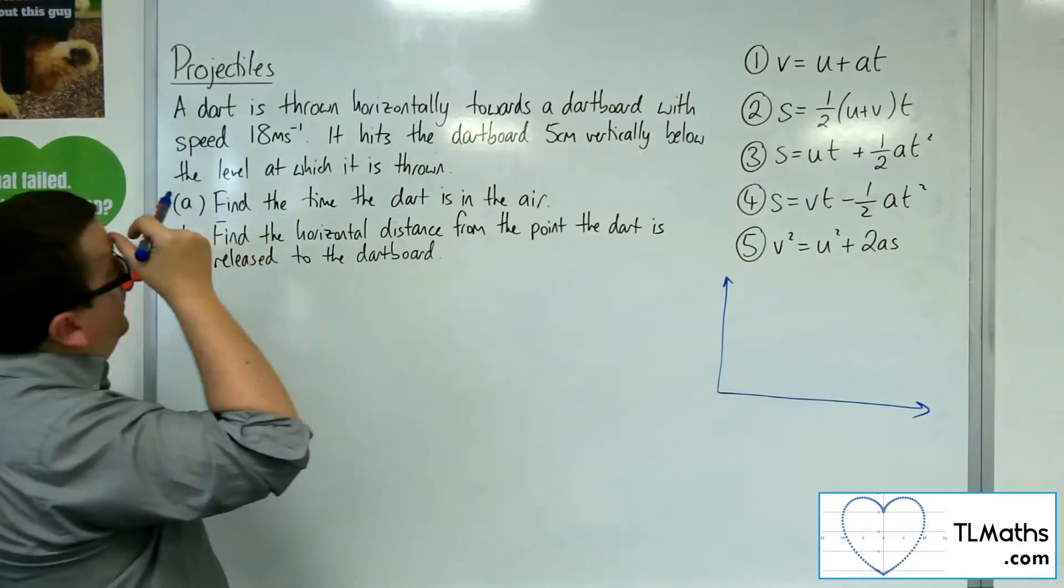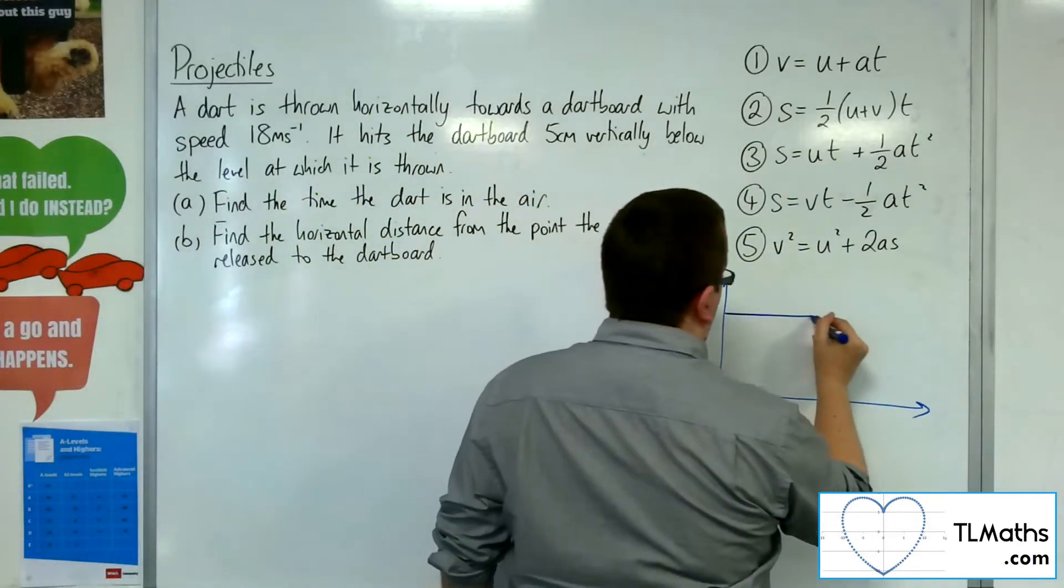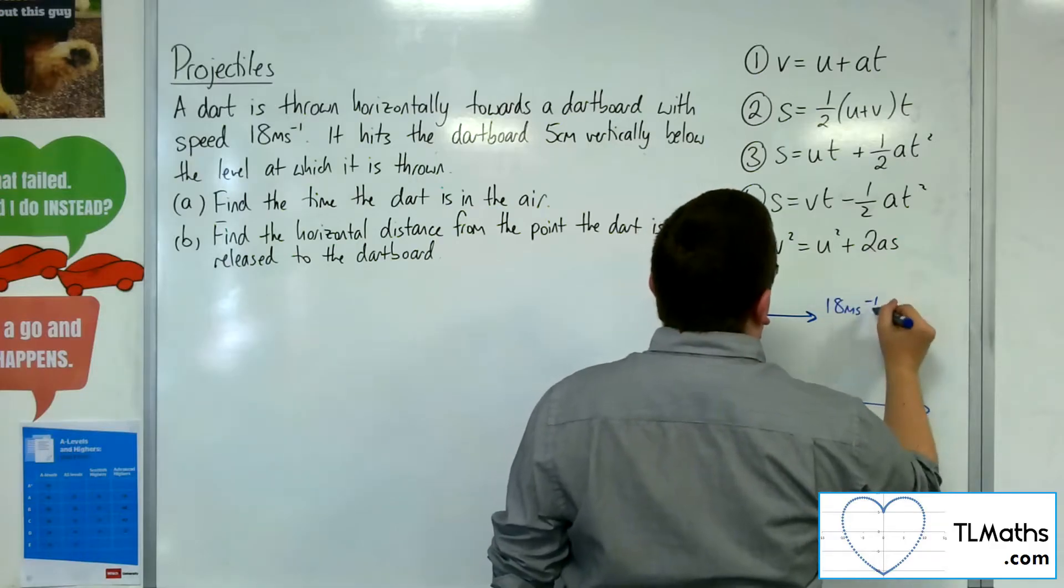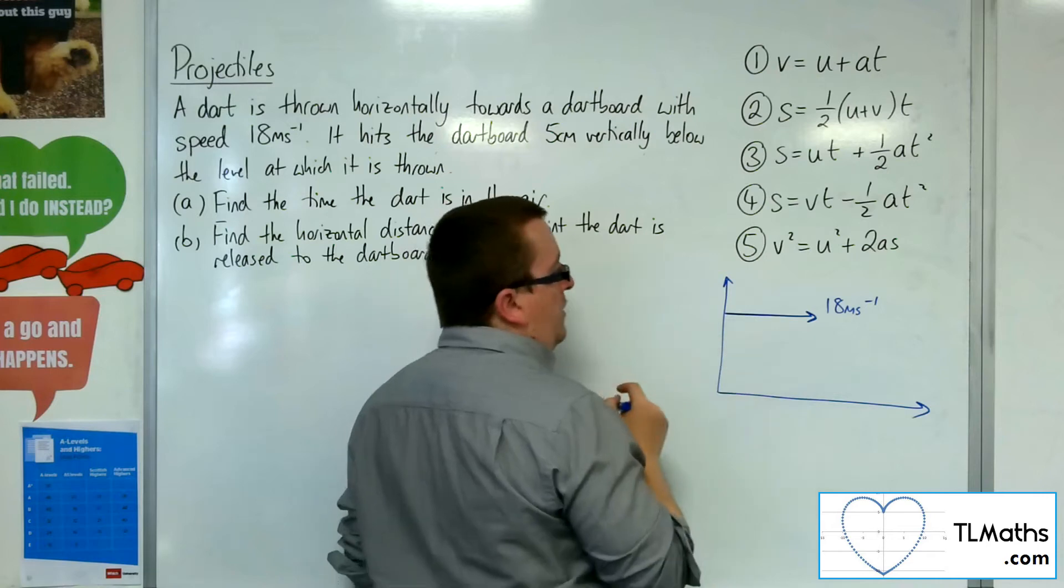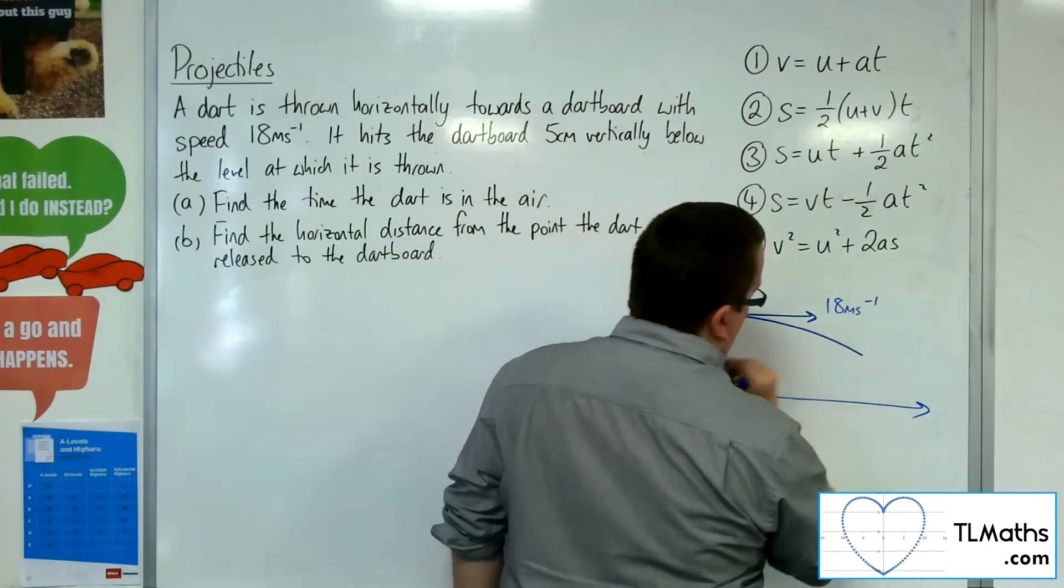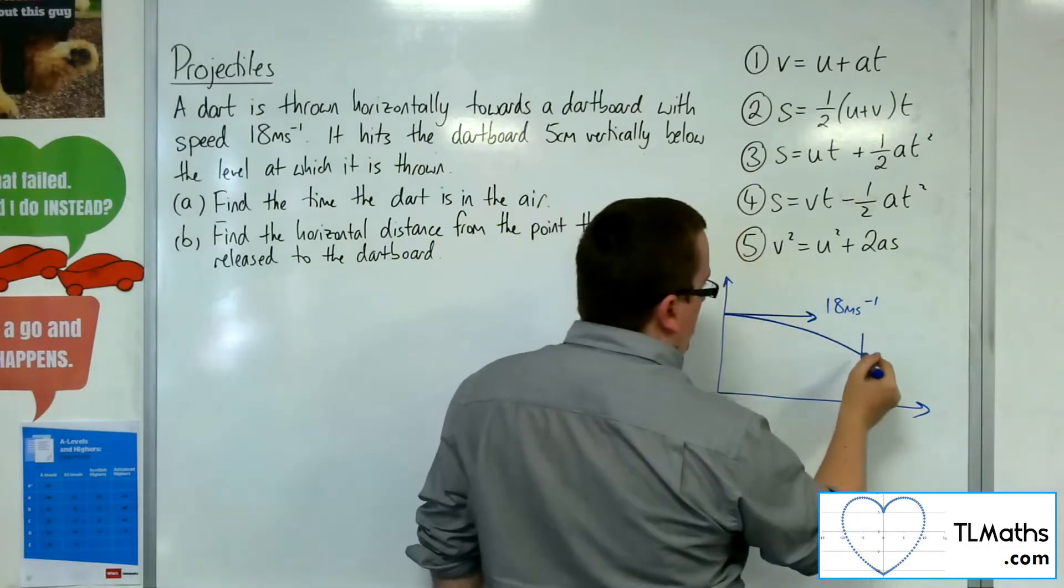So the dart is thrown horizontally at a speed of 18 metres per second. Now the dart won't go horizontally for very long because it's going to come down because of gravity. It's going to hit the dartboard.